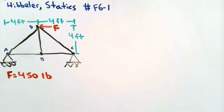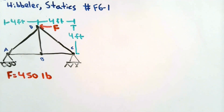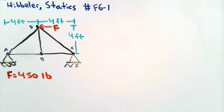We have a simple truss system with four joints connected to a roller at A and a hinge at C. A force of 450 pounds acts on joint D in the negative x direction. With just this information and the knowledge that the system is in equilibrium, can we determine all the forces in each of the individual bars — that is, the forces acting on AD, AB, BC, CD, and BD?